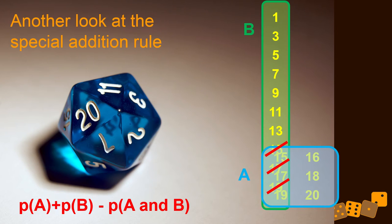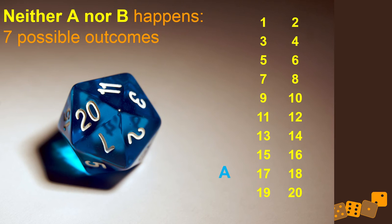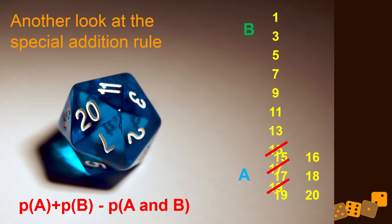So you do A plus B, which would be 16 out of 20. And then you subtract out three of those, because they're the overlap, because you get double overlap. So minus three out of 20. So you end up with 13 out of 20. You end up with the correct number. You get 13 out of 20, 0.65.